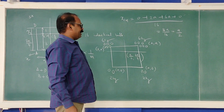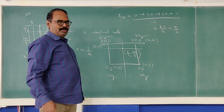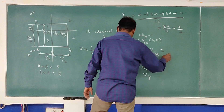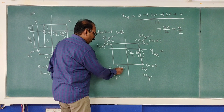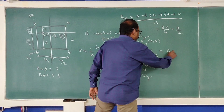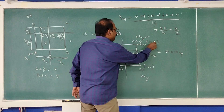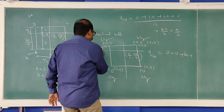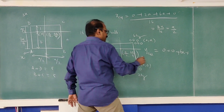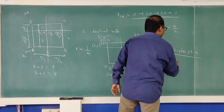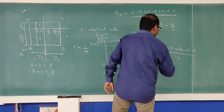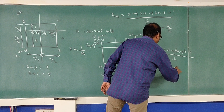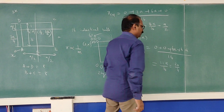Similarly, find the Y coordinate. Y_CM = (M1·Y1 + M2·Y2 + M3·Y3 + M4·Y4) / total mass. Y coordinate of A is 0, Y of B is 0, Y of C is A so mass is 6 giving 6A, Y of D is A giving 6A. Total divided by 16 gives 12A/16 = 3A/4. You get it?